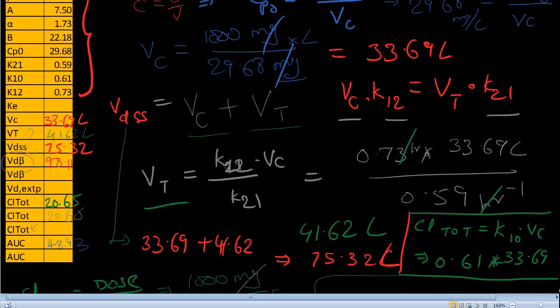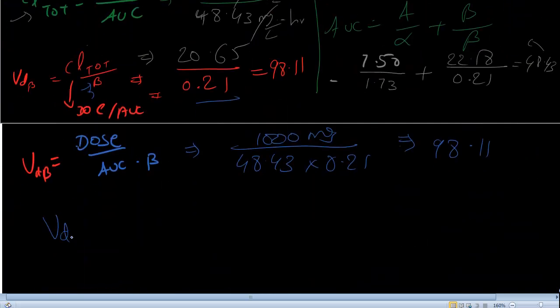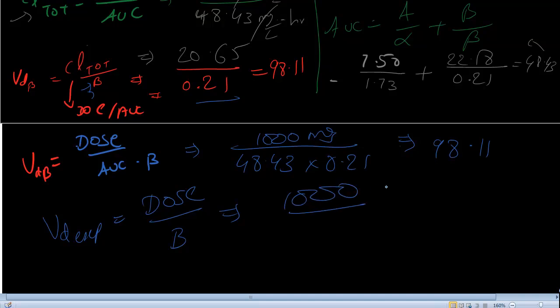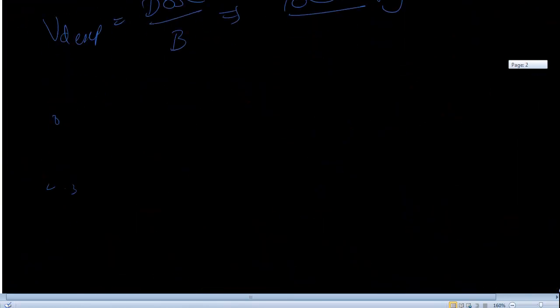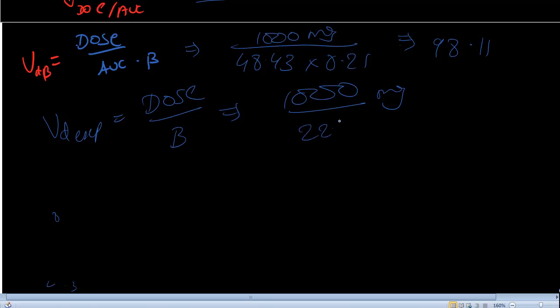So let's mention this here. It's VD beta is 98.11. And we are left with the calculation of VD extrapolated calculation. How do you calculate VD extrapolated? As we discussed in the class, VD extrapolated formula is dose divided by B intercept. Dose is 1000 milligrams. And what is B intercept is 22.18 mg per liter. So I'm going to cancel. And we have value of, again, VD extrapolated is 133.39.